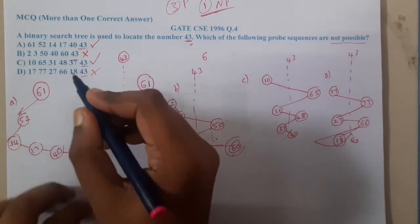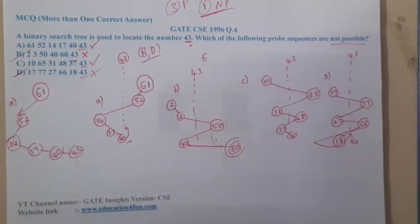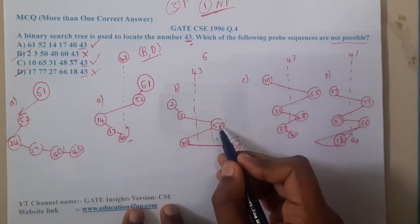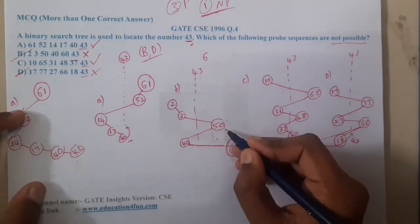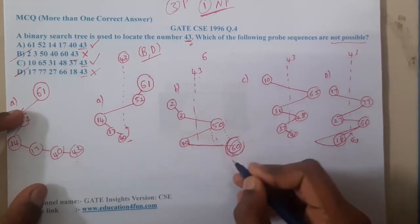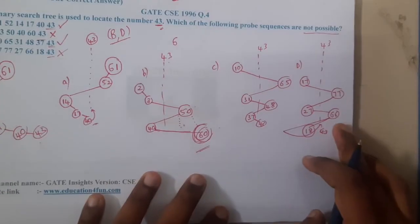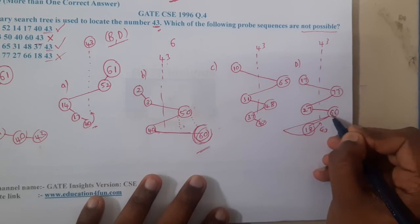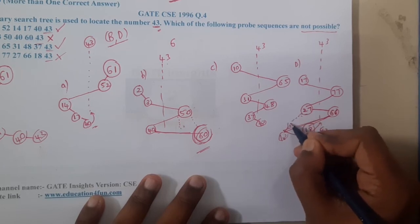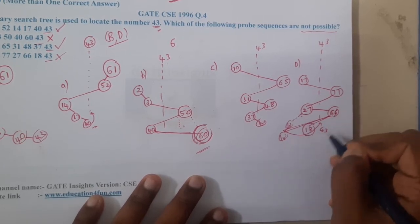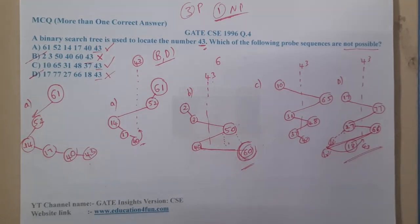I've cross-checked the answer — both B and D are wrong in this question. The reason B is wrong: you were searching for 43, went till 50, came back to 40, but then went to 60 — that's not possible, since 60 would be on the right of 50, not on the right of 40. Similarly for D: from 27 you went to 66, but then traveled to 18 — 18 would be on the left of 27, not on the left of 66. That is why these two options are 100% wrong.